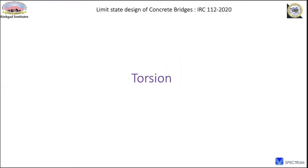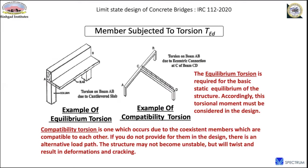Now moving to torsion. There are two types: equilibrium torsion and compatibility torsion. Equilibrium torsion occurs in determinate members where the torsion is required for basic static equilibrium — you must design for the torsion moment and cannot avoid it. Compatibility torsion occurs due to the coexistence of compatible members, such as a main beam with another beam resting on it — the rotation at that point causes torsion in the main beam.